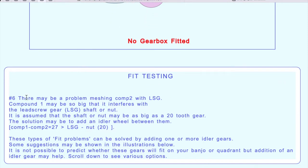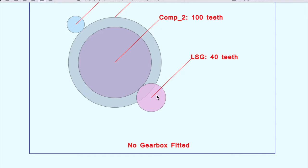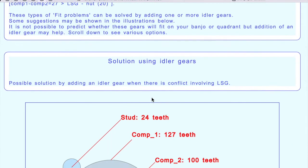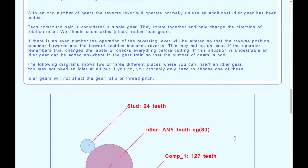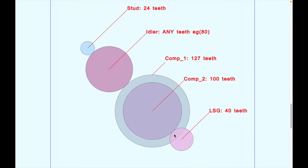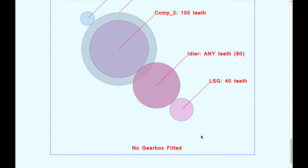The fit test thinks there could be a problem with compound two meshing with the lead screw gear - if there's a large nut or shaft, the gear looks like it would hit the lead screw gear shaft. We may want to put an idler gear in between to avoid that. The program shows you where you can put an idler gear, which is quite useful for visualizing what the gear train will look like. It shows different ways to insert idler gears - remember, idler gears don't affect the gear ratio, so they can be placed anywhere convenient.